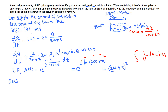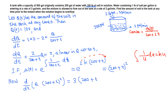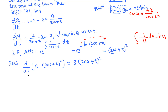We multiply the differential equation by this integrating factor (200 + t)². The left-hand side automatically becomes the derivative of q times (200 + t)², and the right-hand side becomes 3 · (200 + t)². We multiply both sides by the integrating factor, and the left side becomes this derivative form automatically.